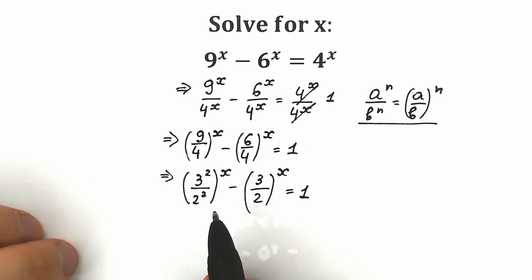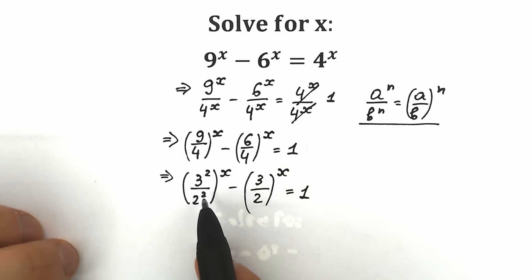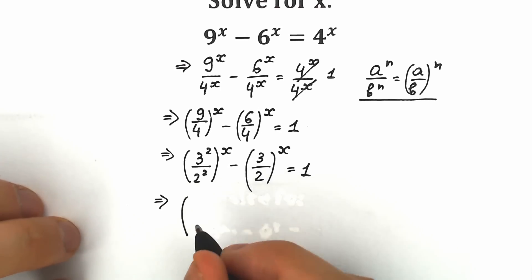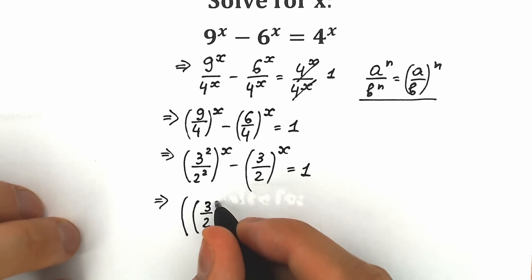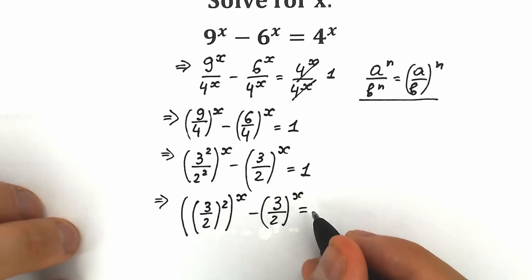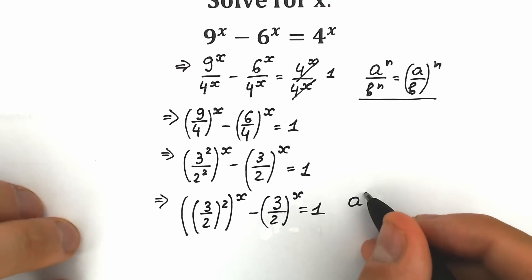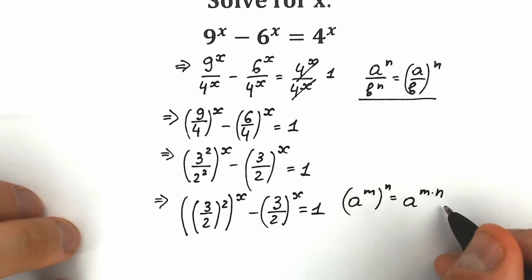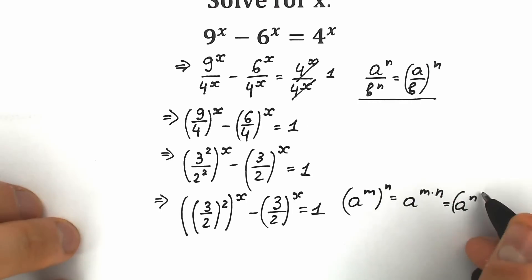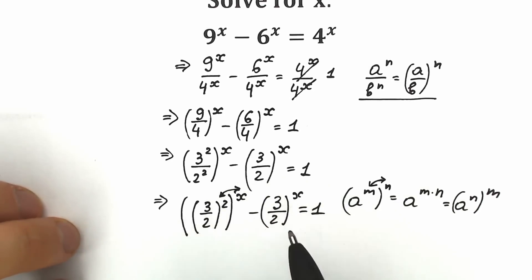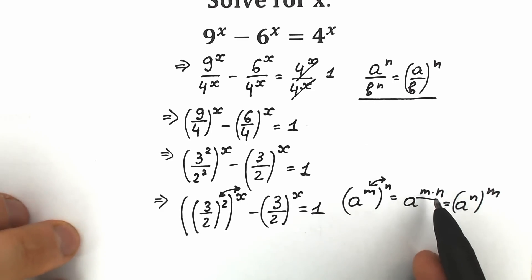Now let's apply the property again. We have 3 to the second power over 2 to the second power — different bases but the same power — so we can write this as (3 over 2) to the second power. So we have (3/2 to the second power) to the x, minus (3/2) to the power x, equal to 1. There's a great property: a to the m raised to the n equals a to the m times n. Since multiplication is commutative, we can swap the 2 and x, rewriting as (3/2 to the x) squared minus (3/2 to the x) equal to 1.